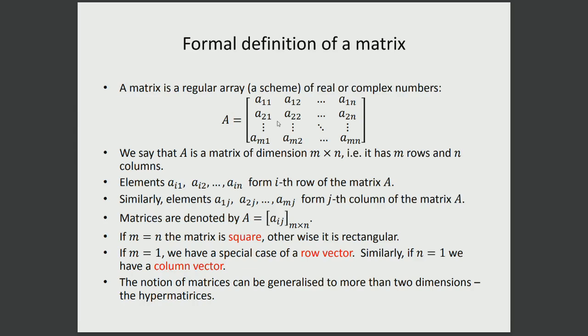We defined what a matrix is: an array with elements such as A11, A12, which are the elements on the first row. A matrix A has m rows and n columns, so we say A has size m by n, meaning m multiplied by n elements in total. These elements can be either real or complex numbers.